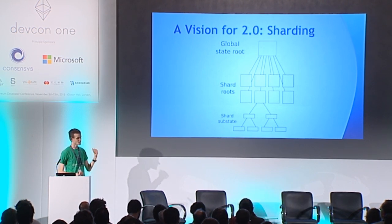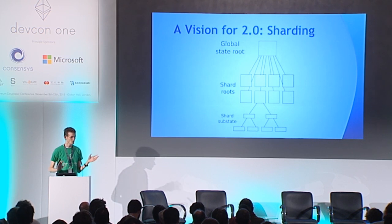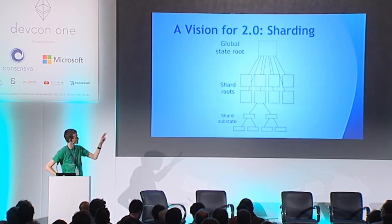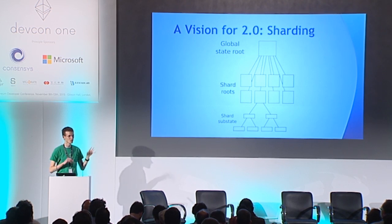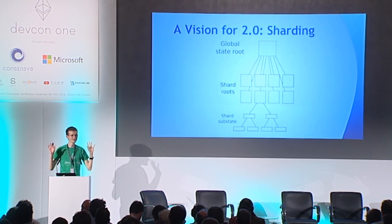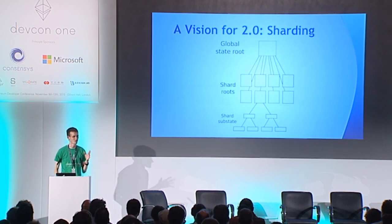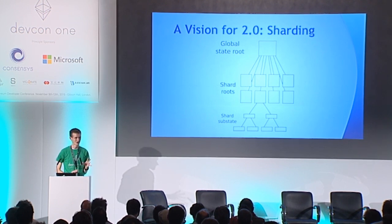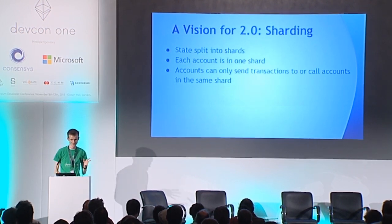The state is represented in a Merkle tree as usual. Merkle roots of the state are represented in the shard roots. Then you build another Merkle tree out of the shard roots and you get the global state root of the entire Ethereum system. So you can still have some concept of global truth even in a scalable context.